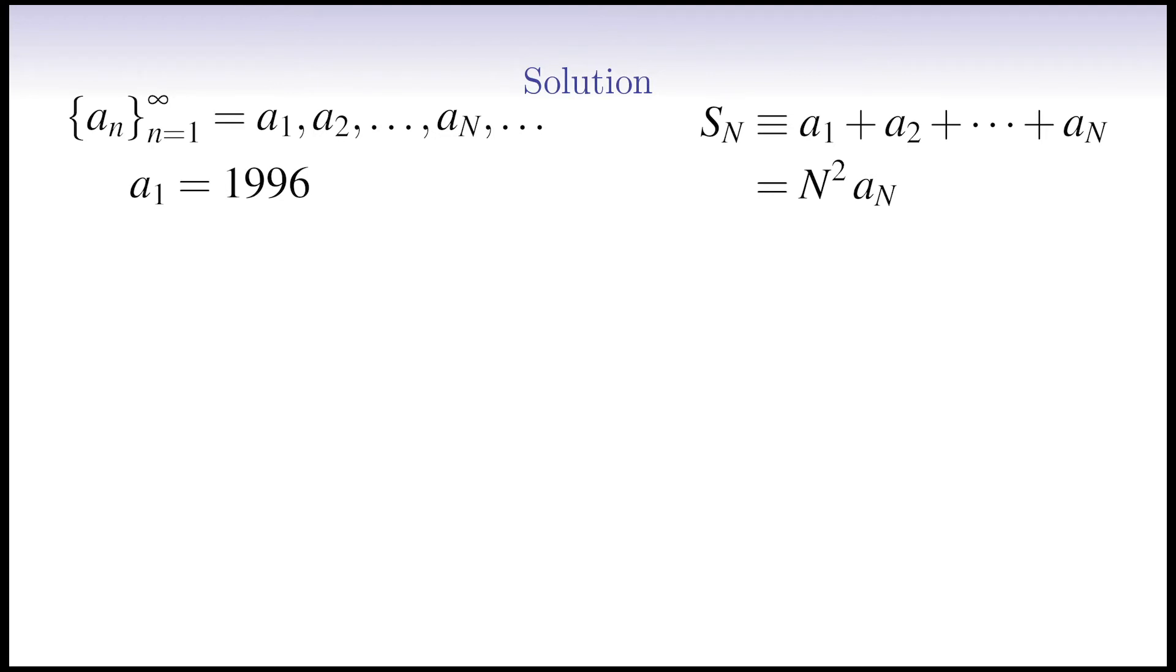We start from the first term in the partial sum. Obviously, S1 is equal to A1, so S1 is equal to 1996.